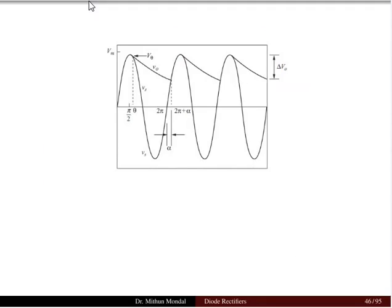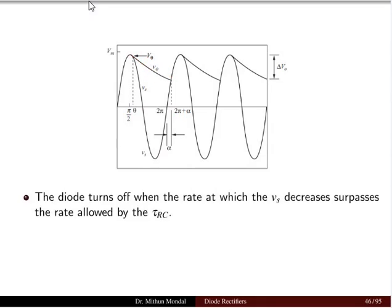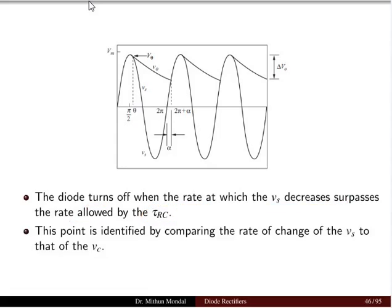This is the waveform of the circuit. We can see that at a certain θ greater than π/2, the voltage V₀ decreases exponentially, and again at 2π + α the voltage will increase. The diode turns off when the rate at which the voltage decreases surpasses the rate determined by the time constant of the RC network.